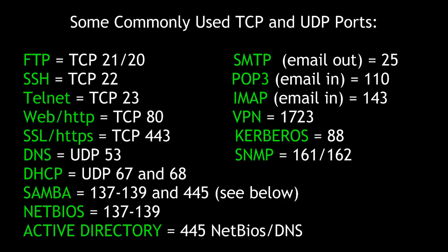There are many standard and commonly used TCP and UDP ports. Some of these include: FTP on ports 21 and 20, Secure Shell on 22, Telnet on 23, HTTP on 80, HTTPS/SSL on 443, DNS on 53, DHCP on 67 and 68, Samba and NetBIOS on 137 to 139, Active Directory on 445, SMTP mail-out on 25, POP3 on 110, IMAP on 143, VPN on 1723, Kerberos on 88 for Active Directory, and SNMP on 161 and 162.